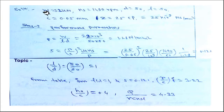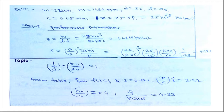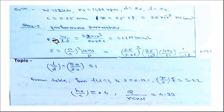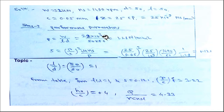Starting with the given data: load W, journal speed, diameter and length of the bearing, and clearance c = 0.05 mm, viscosity = 25 centi-poise. The first step is to calculate the performance parameters. Pressure equals force divided by projected area, so: 3.2 × 10³ N divided by (50 × 50) mm², giving a pressure of 1.28 N/mm².